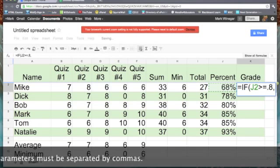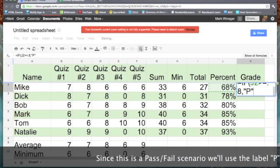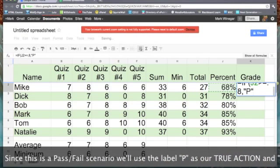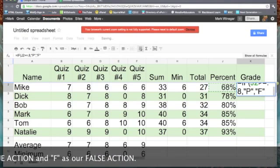Well, in that case Mike would have passed, so I'll put a P in quotes—I'm inserting a label and the contents of that label is P. If it's false, we'll put an F in. I'll close that up with a closing parenthesis and hit return.